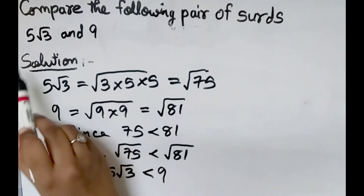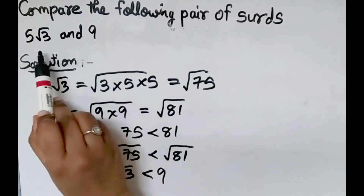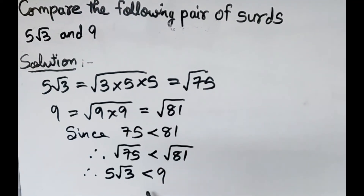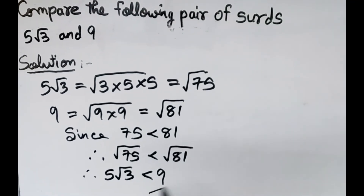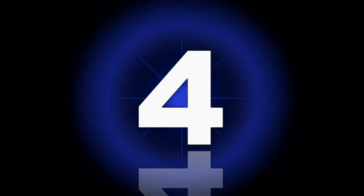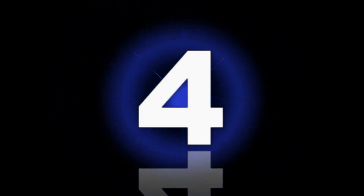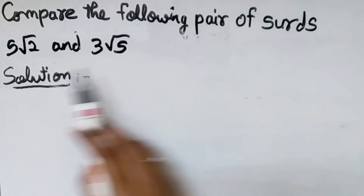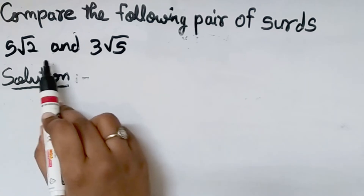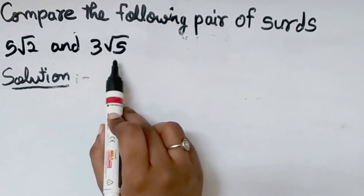So we have compared these two surds: 5 root 3 is less than 9. This is the final answer. Next, compare 5 root 2 and 3 root 5. We have seen two methods, so we can use either one.